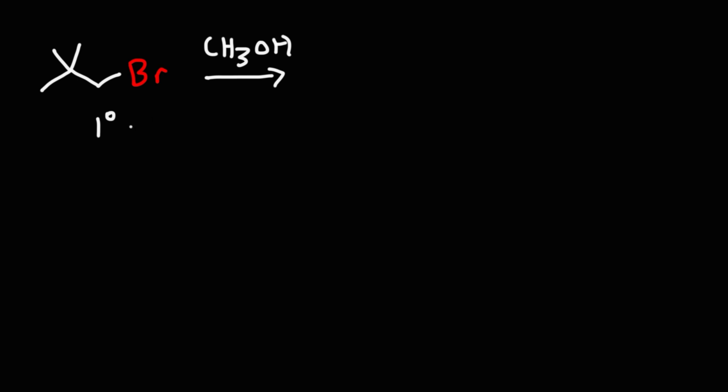Now even though this carbon is primary, it's next to a very bulky tert-butyl group. We have a quaternary carbon here. And as a result, this particular primary carbon is for the most part sterically hindered.